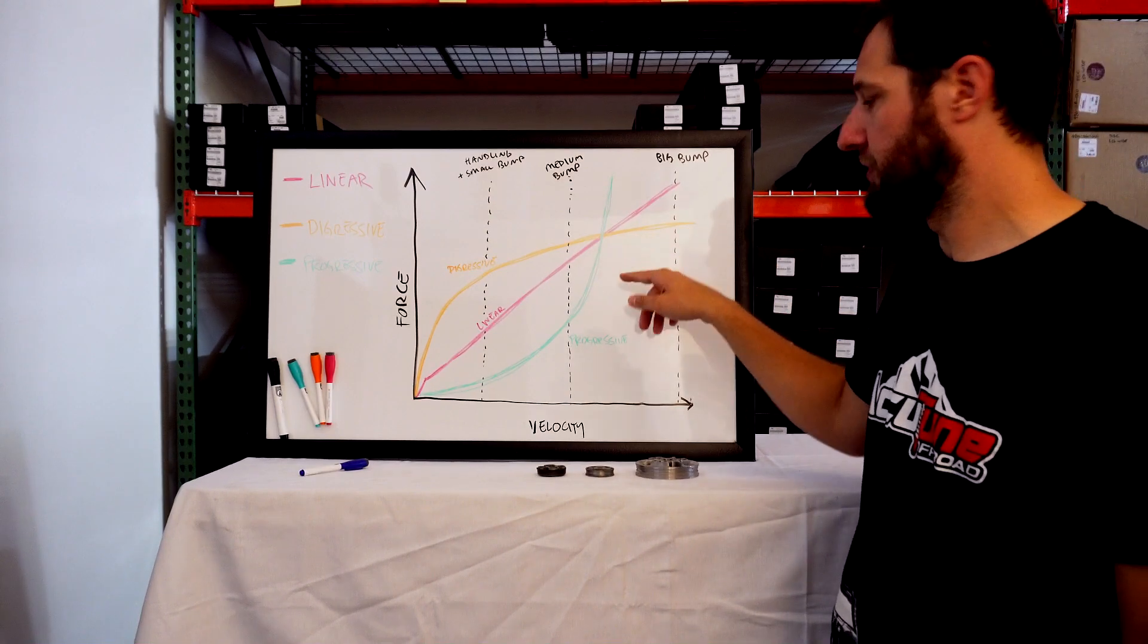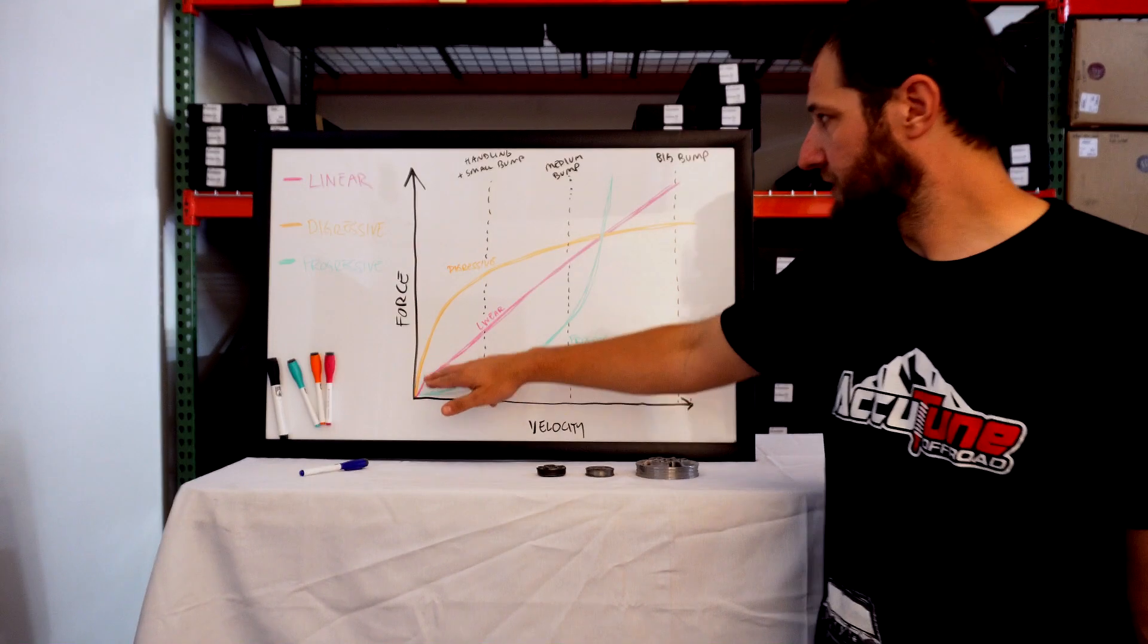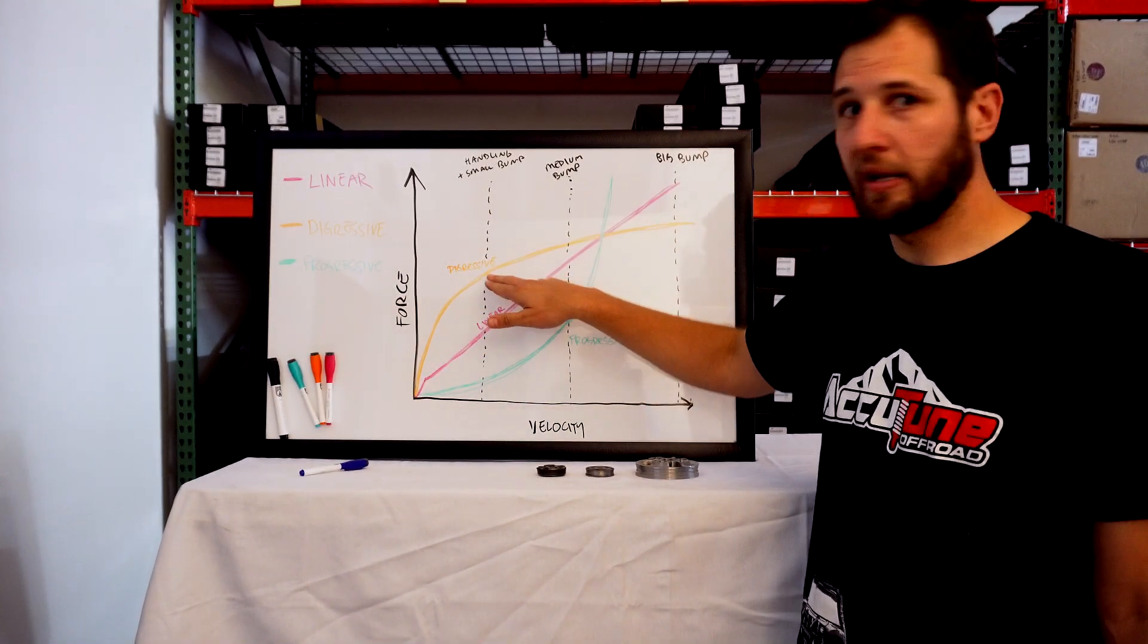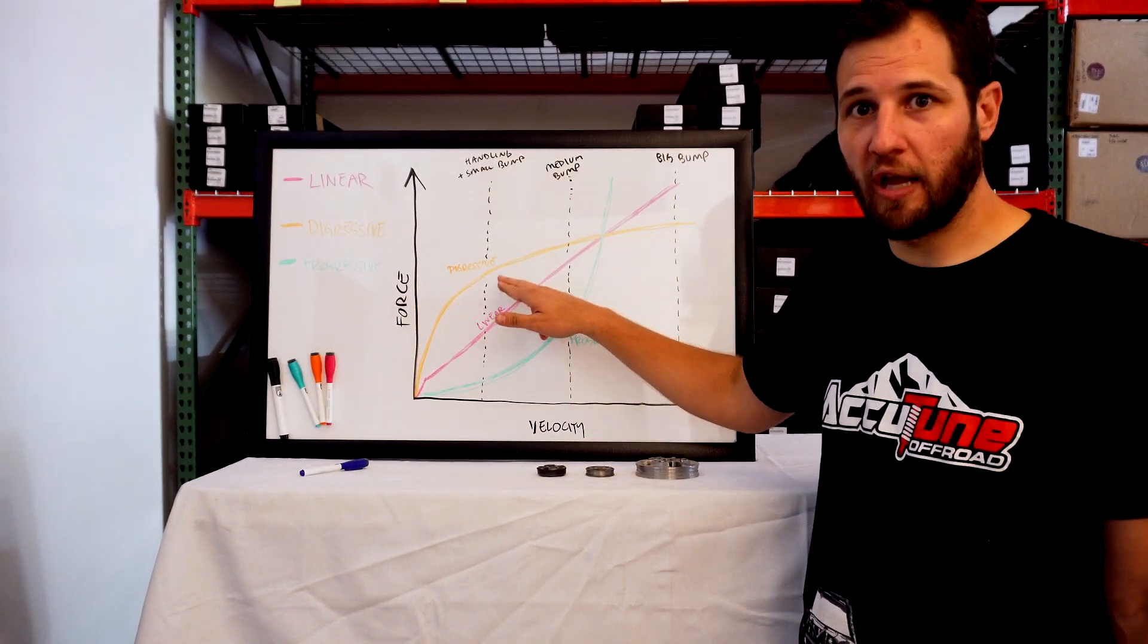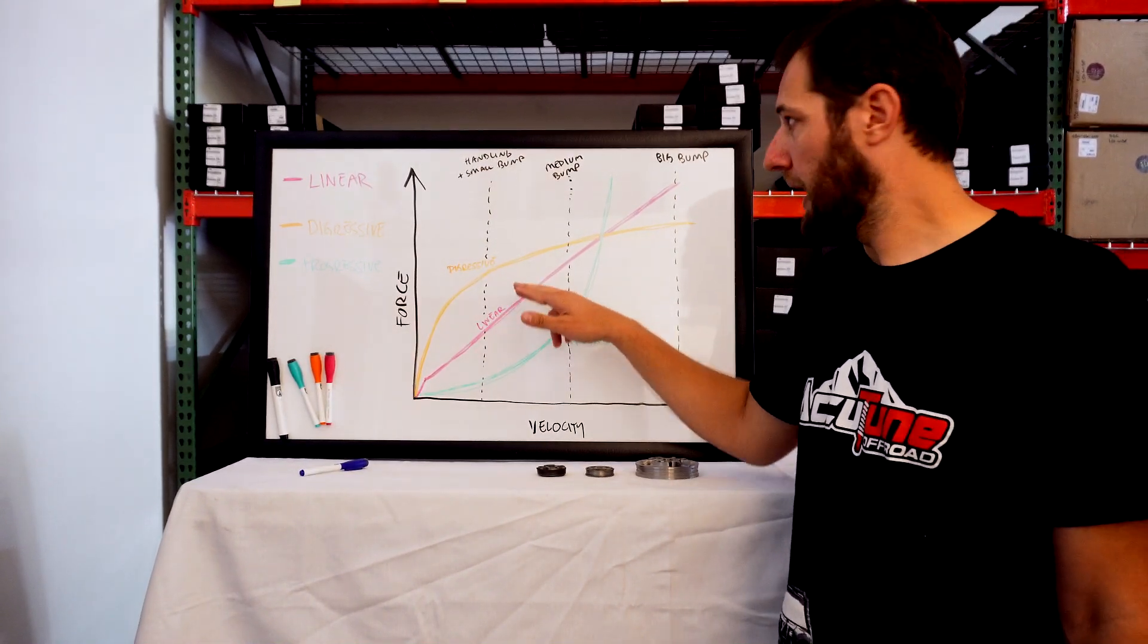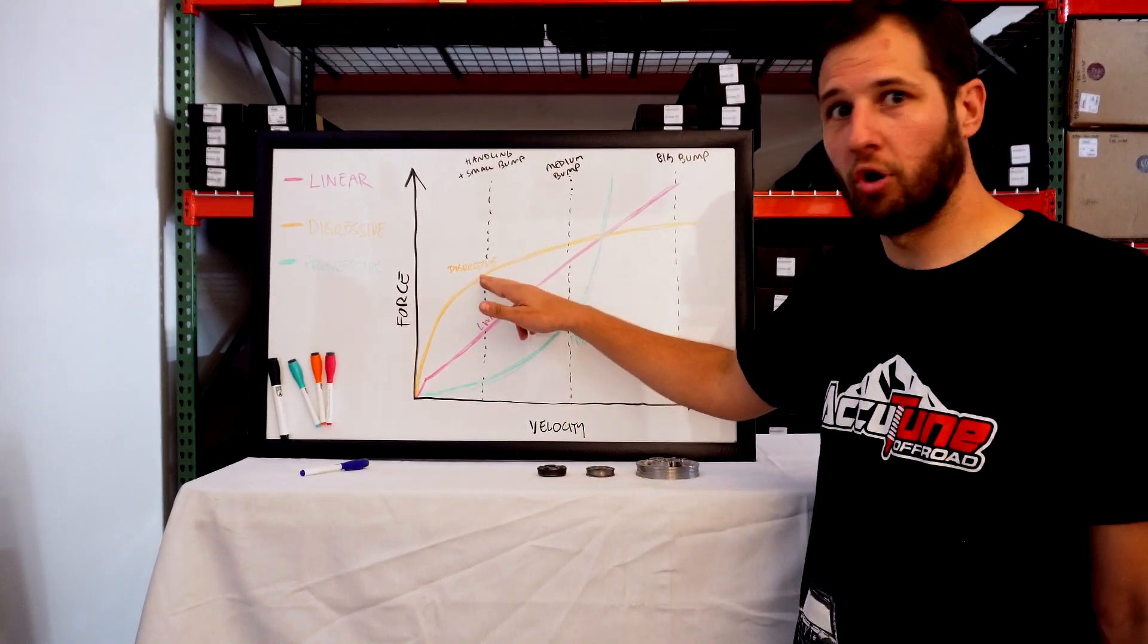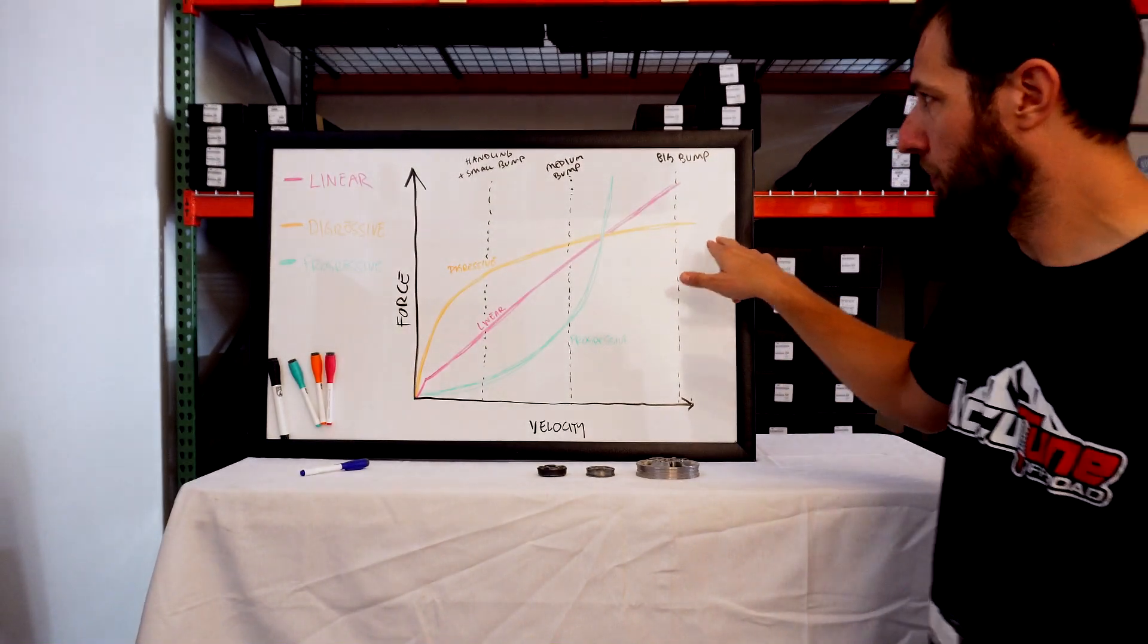The big disadvantage that we see to digressive shocks is if you're hitting small to medium stuff, it's going to feel really firm. But if you really start getting into big bumps and pushing your suspension to the limit, it'll feel control, control, control, then no control. You sort of lose control.